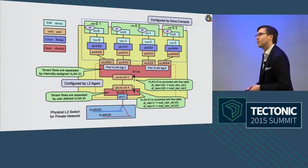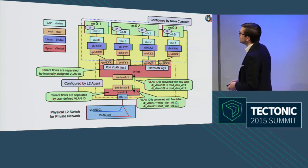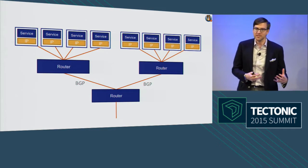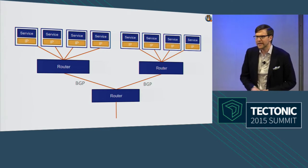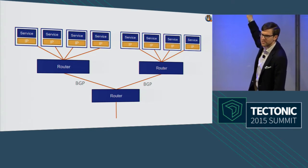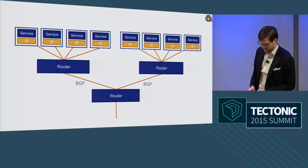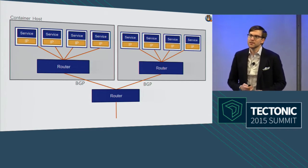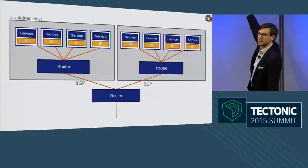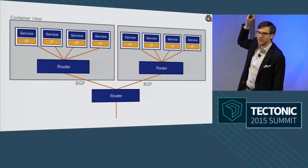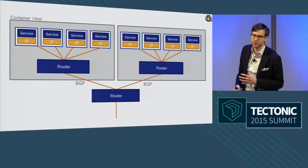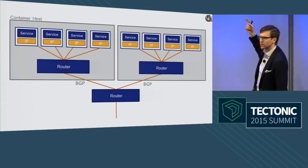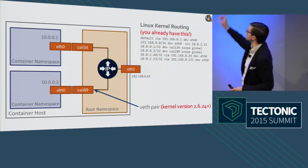He asks himself, can we make data center networks look more like the internet? Here's a schematic of some corner of the internet. You've got routers speaking control protocols to one another — in this case BGP, the border gateway protocol. Back in the day, a single server ran a single service with a single IP address connected to a router. Today, instead of single physical servers, we containerize those services, give them each an IP address, and connect them to the network. This architecture is Project Calico.